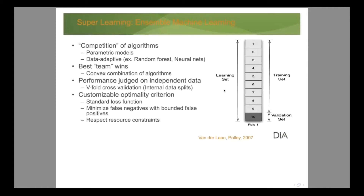For learning the prediction function, we use ensemble machine learning via cross-validation. You can come up with many parametric logistic regression models, but also many machine learning algorithms with various tuning parameters, and different screening approaches — giving a large range of possible algorithms to learn this conditional probability of death. In the end, you have no idea which works best for your specific data, as that depends on sample size and how complex the truth is.